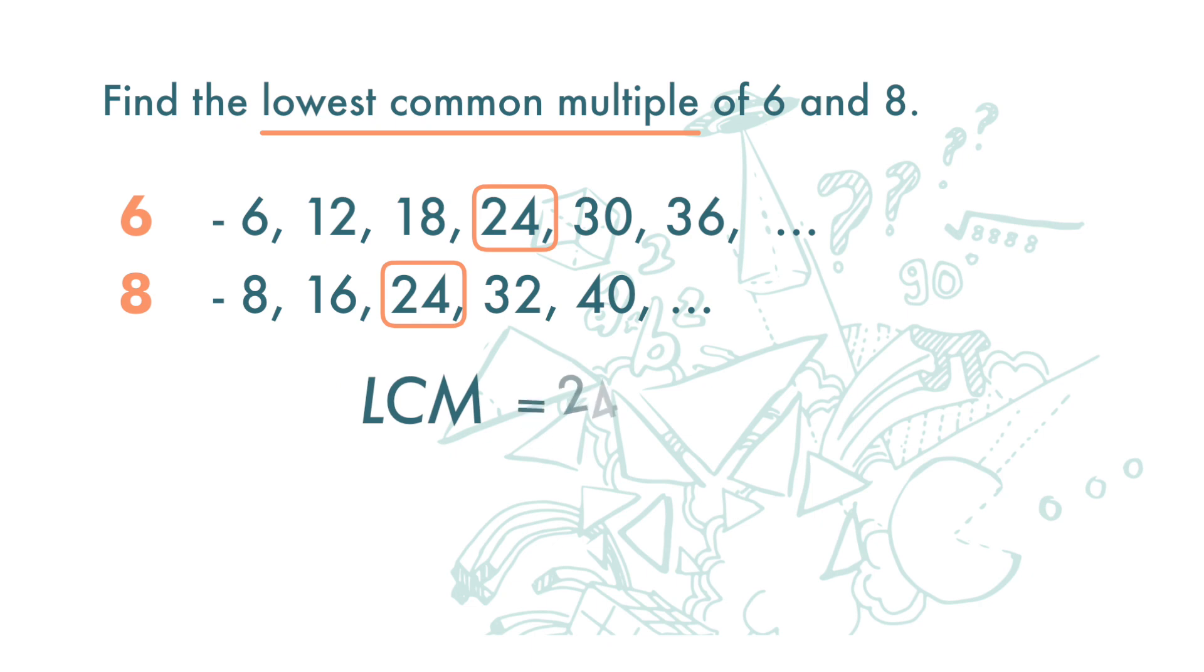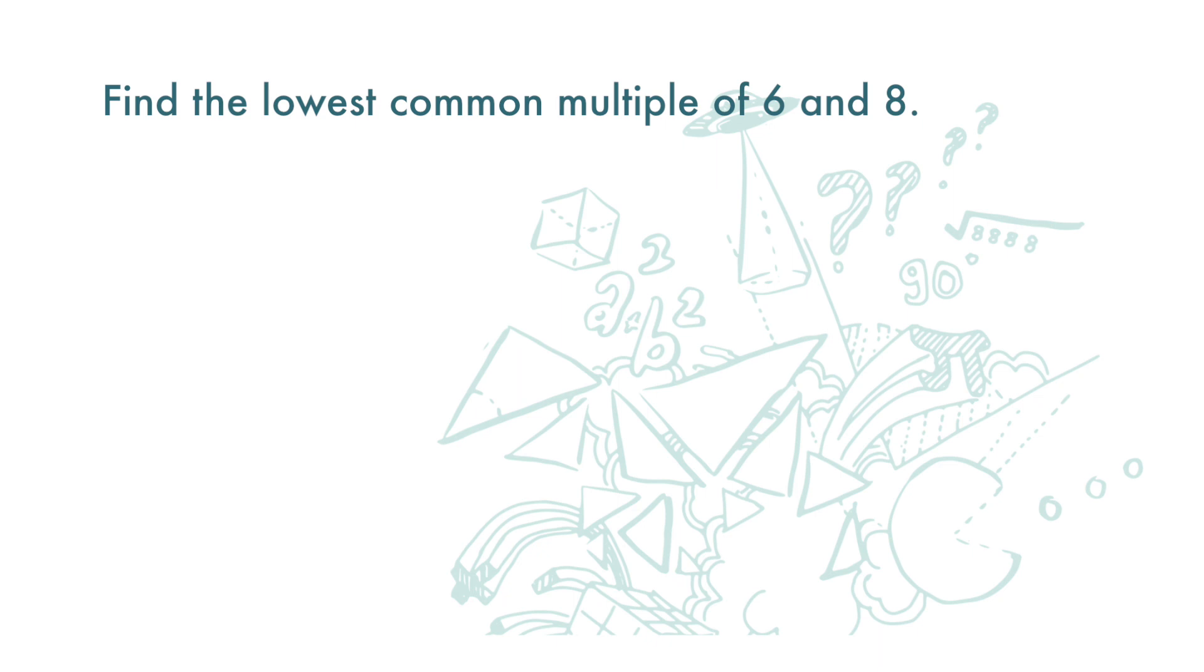The second method is repeated division. 6 and 8 can both be divided by 2: 6 divided by 2 is 3, 8 divided by 2 is 4. Then there's no other number where both 3 and 4 can be divided by.